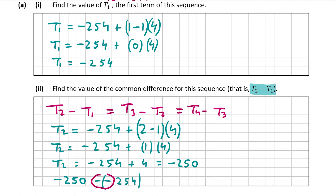So now we can take minus 254 away from minus 250, giving us minus 250 minus minus 254. When you have two minuses beside each other like this, that turns into a positive. So essentially what we have is minus 250 plus 254, which is equal to 4. So therefore the common difference is equal to 4.